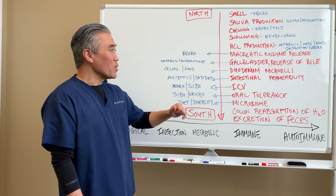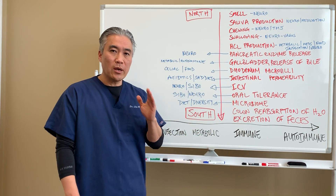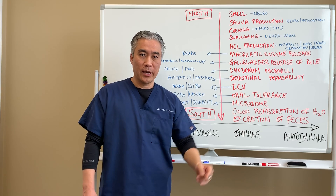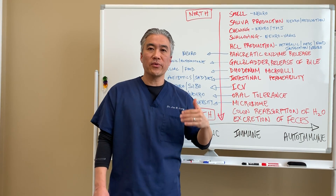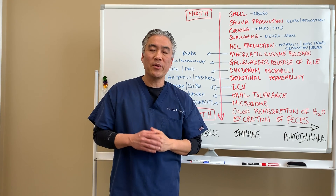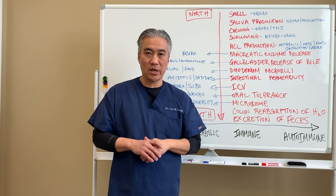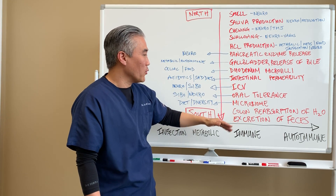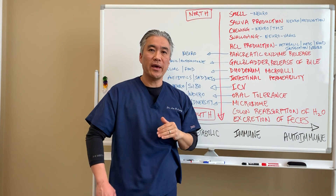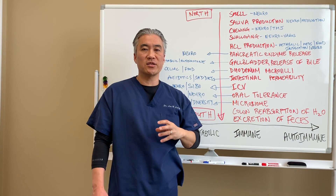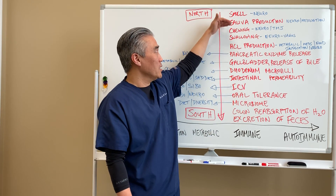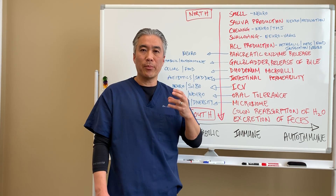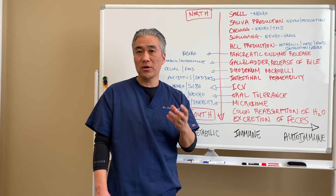On the board behind me, we're going to look at the red portion first. When we have a patient that comes into our office, we evaluate them from north to south — basically from mouth to rectum. This north-to-south clinical thinking is necessary to determine what type of condition the patient has. We look at whether they can smell properly, whether they've lost their sense of smell and taste over time, and whether they have proper saliva production. When you look at the mouth, the tongue should be shiny and red.